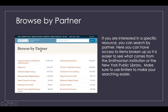You can also browse by partner — these are different resources across the United States putting their items into DPLA. If you're interested in only seeing items from, say, the Smithsonian Institution, this is how you can ensure everything you're looking at is from that one place. They also show the quantity each partner has — obviously the National Archives and Records Administration has the most, then probably the Smithsonian. Make sure to use those left-side limiters to keep results manageable.